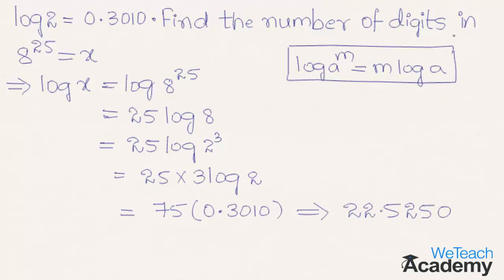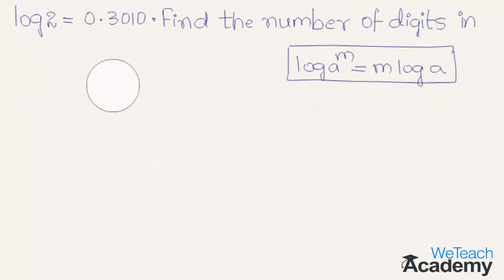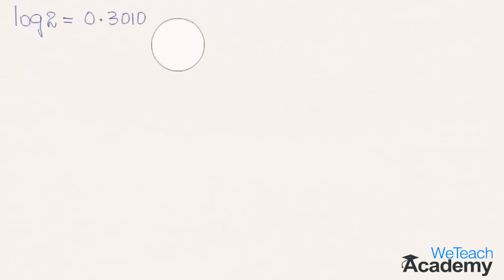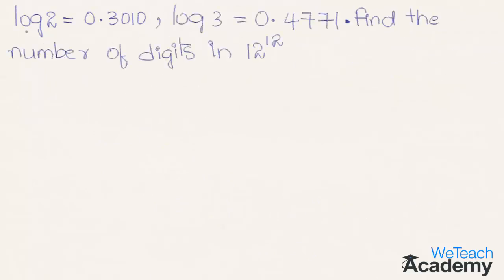So the number of digits in 8 raised to the power 25 is equal to 23. Now let us proceed and solve one more problem using the same concept. The given problem is: log 2 is equal to 0.3010 and log 3 is equal to 0.4771 — find the number of digits in 12 raised to the power 12.